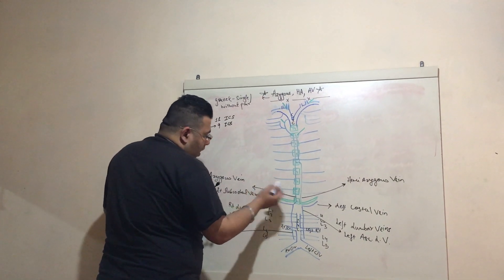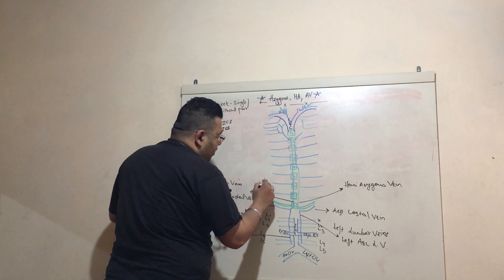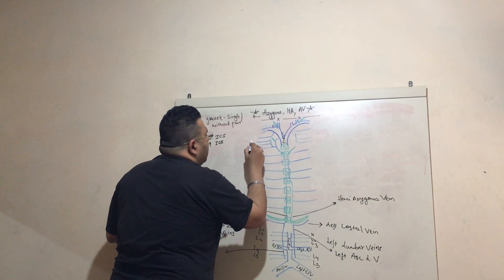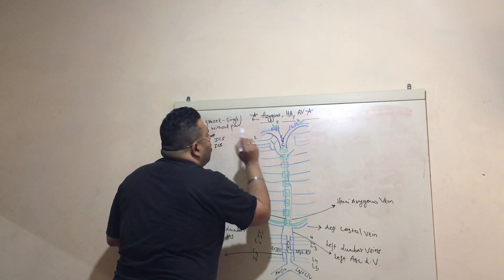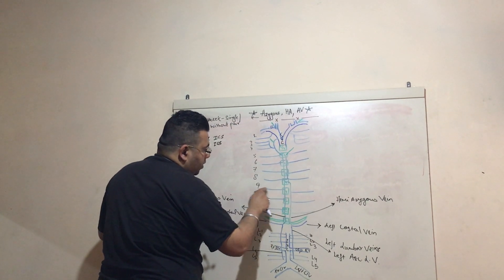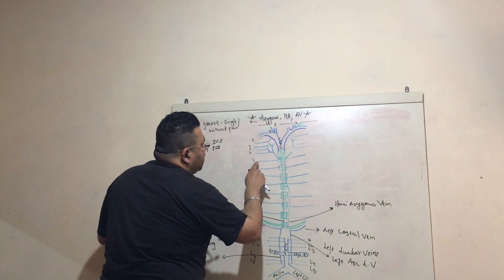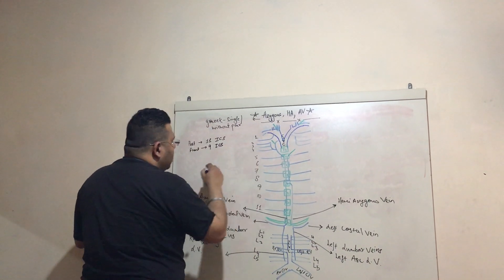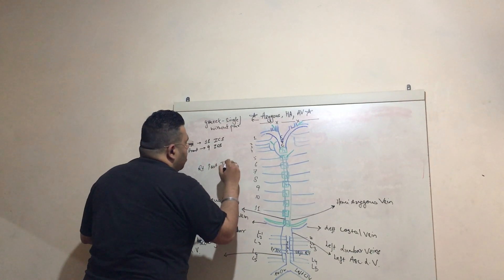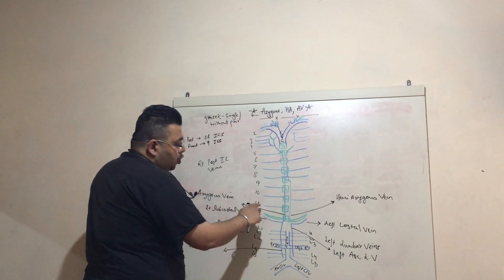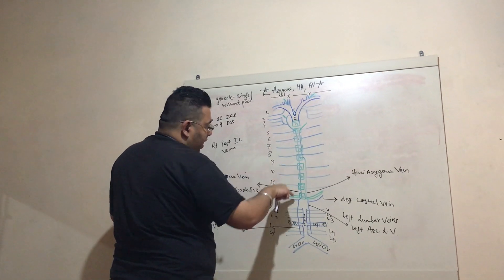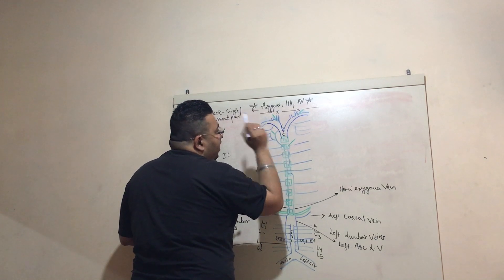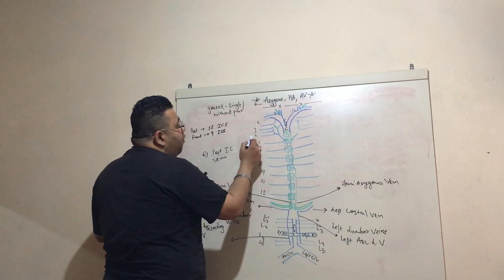Numbering from 1 to 11, these are the right posterior intercostal veins. From the 5th to 11th, they drain directly into the azygous vein. The azygous vein then travels upward and near the hilum of the lung drains directly into the superior vena cava.